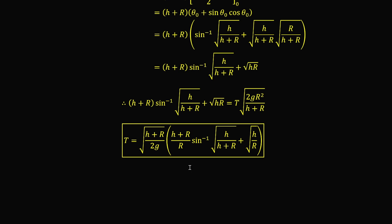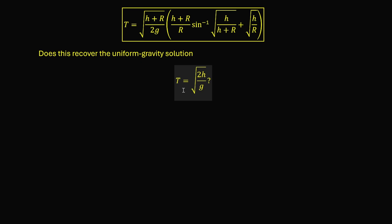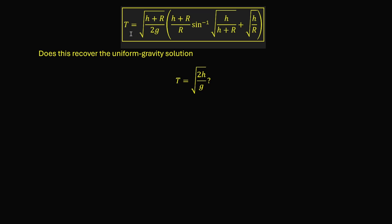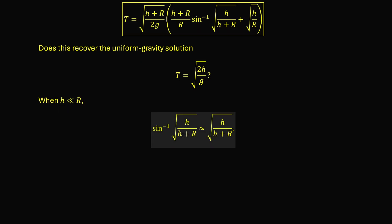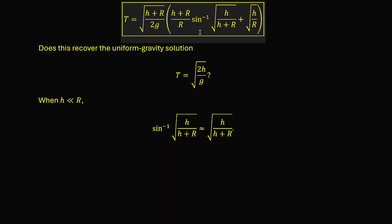We know that under uniform gravity, t = √(2h/g). We now show that the formula for T we just derived recovers the uniform gravity solution when h is small. When h is much less than r, the argument of the inverse sine function is close to 0. So we can use the approximation arcsin(x) ≈ x. Here arcsin(√(h/(h+r))) is approximately √(h/(h+r)). We substitute this approximation into the formula for T to see what happens.